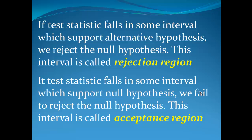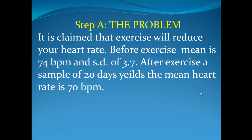So if the test statistic falls in some interval where it supports the null hypothesis, we'll fail to reject the null hypothesis, and therefore we will have to accept it. We'll make that clear when we go through the problem. So here's a problem. It's claimed that exercise will reduce your heart rate. Before exercise, the mean is 75 beats per minute with a standard deviation of 3.7. After exercise, a sample of 20 days yields the mean heart rate of 70 beats per minute. The claim is that we've actually reduced our heart rate.